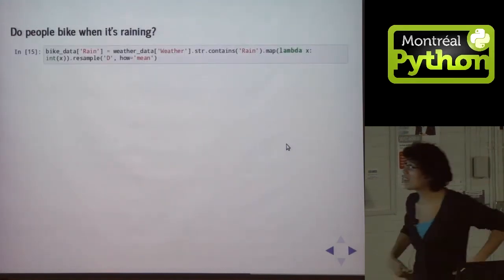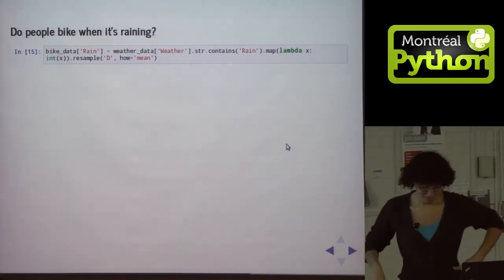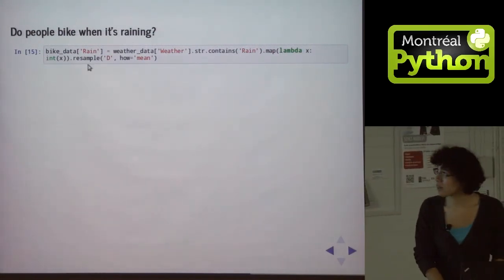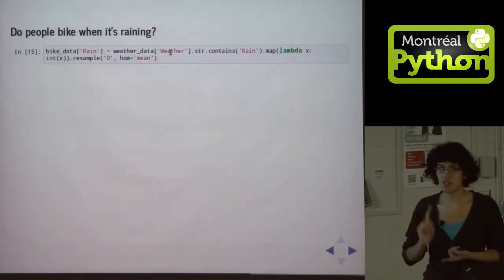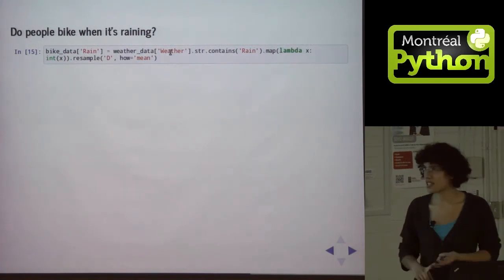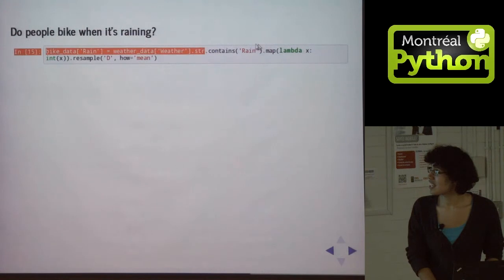So I wrote this super long one-liner, which I'm going to walk through with you. So I'm going to make a rain column in my bike data. So you remember how in weather we had a column which was fog or rain or freezing rain or snow? So we take that, and then we look at str for some string functions, check to see if it contains rain.